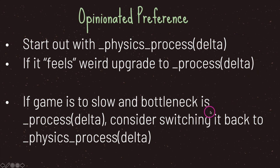However, as your game grows your performance may suffer if too much code logic is inside the process virtual method. When your game is slow, first check the debugger for memory leaks — we'll cover that in a future episode. If there is no memory leak, look inside the process virtual method and see if you can move that code logic back into the physics process virtual method.